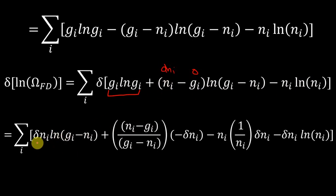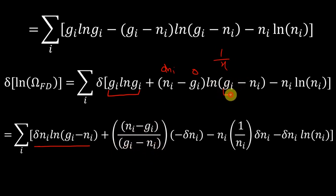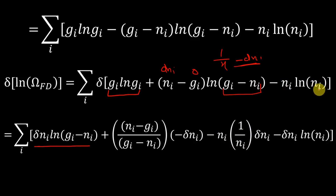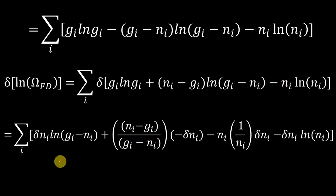Applying the product rule: the first term gives the first function times the derivative of the second, which is dN_i. Then the second function (N_i - G_i) times the derivative of the first, using d/dN_i [log(G_i - N_i)] = 1/(G_i - N_i), with the chain rule giving -dN_i. Similarly for the N_i·log(N_i) term: minus [log(N_i)·dN_i + N_i·(1/N_i)·dN_i].